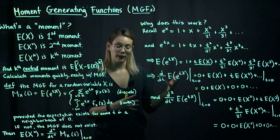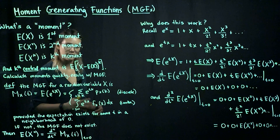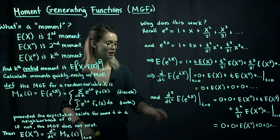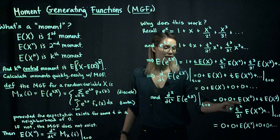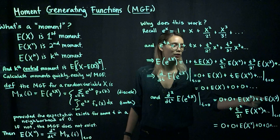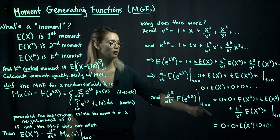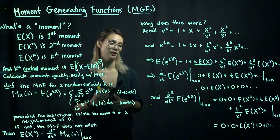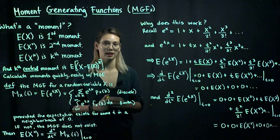That may satisfy your curiosity, but let's do one more to solidify things and get the pattern down. If we take one more derivative with respect to t and then evaluate at t equals 0, we're going to get 0, plus 0, plus expected value of x squared, plus t times the expected value of x cubed, plus and so on. When we evaluate at t equals 0, we get 0, plus 0, plus the expected value of x squared, plus 0, and so on. So we end up with the expected value of x squared — the second moment of x.